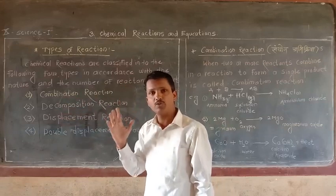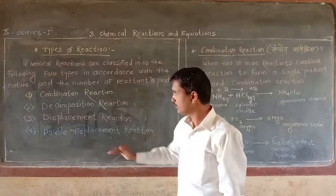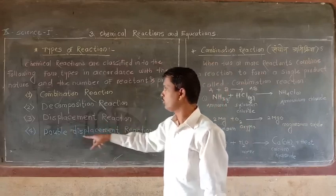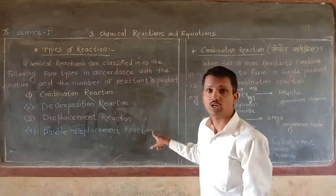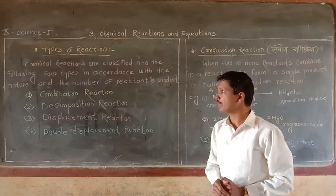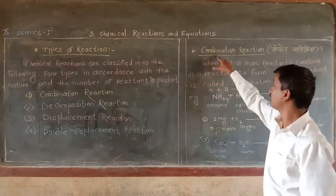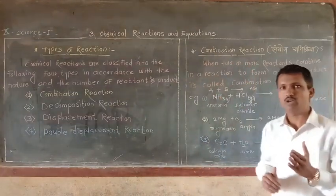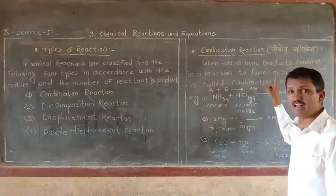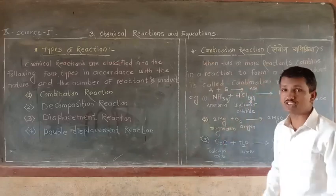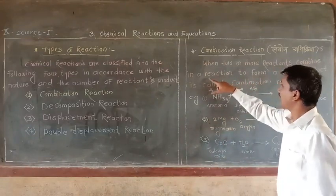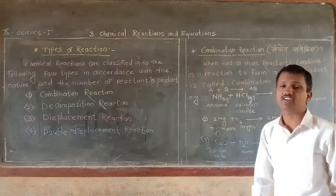The types include decomposition reactions and displacement reactions. The first type of reaction is combination reaction. When two or more reactants combine in a reaction and form a single product, then this reaction is called a combination reaction. When two or more reactants combine in a reaction to form a single product, then this reaction is called a combination reaction.